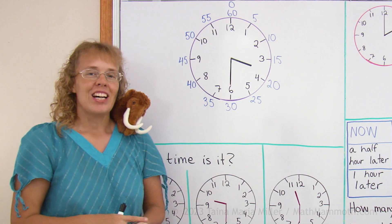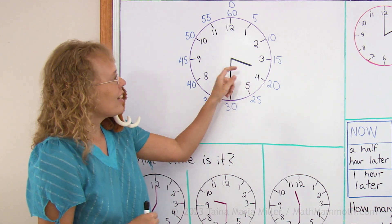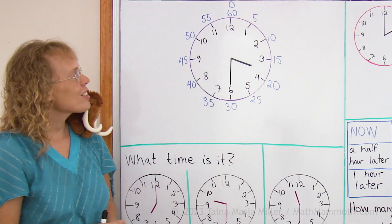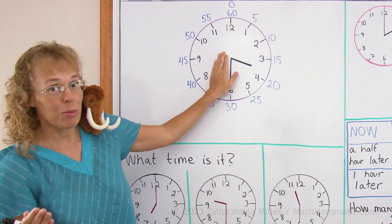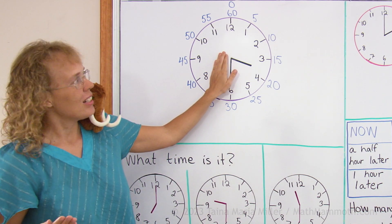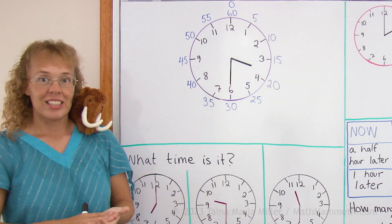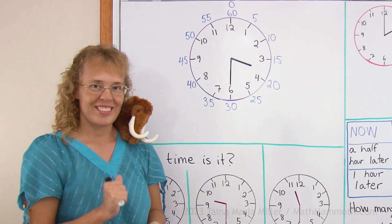We have already studied how to read the clock for the hour hand for the whole hours and half hours. So if you ignore this minute hand, what time is it? You should be able to tell. See, it's halfway between 3 and 4. It is half past 3, right?